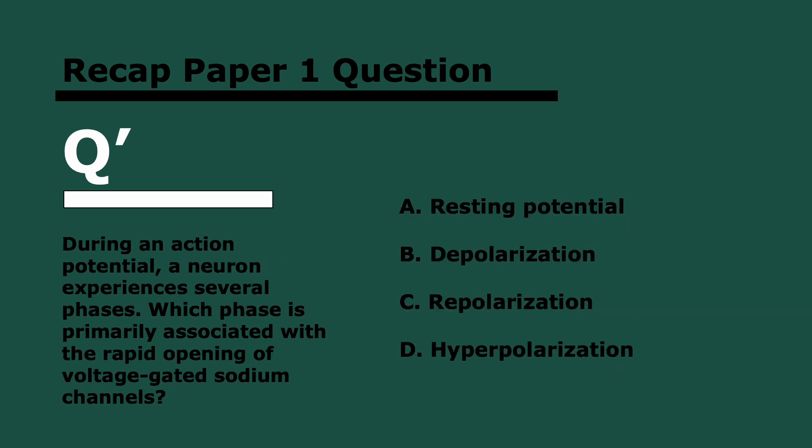And the last question. During an action potential, a neuron experiences several phases. Which phase is primarily associated with the rapid opening of voltage-gated sodium channels? Again, three, two, and one. It's depolarization. Remember, that's the first step where the sodium channels open, all the sodium goes in, and the membrane potential becomes really, really positive. And then during repolarization, the potassium goes out. So it reverses what the sodium-potassium pump does, which takes sodiums out and potassiums in. I've repeated that 20 times, but I hope it's clear.